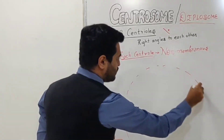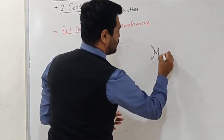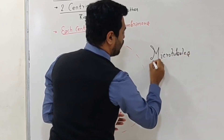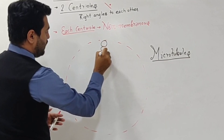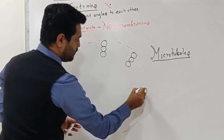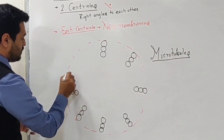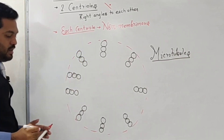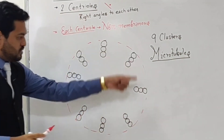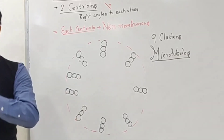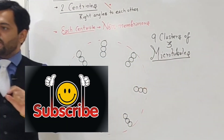The appearance of this non-membranous centriole structure: there is presence of certain structures known as microtubules. The arrangement of these microtubules is in groups — 1st, 2nd, 3rd, 4th, 5th, 6th, 7th, 8th, and 9th. So the microtubule arrangement is 9 clusters. Each group has 3 microtubules, so there is presence of 9 clusters of 3 microtubules, meaning 27 microtubules total.